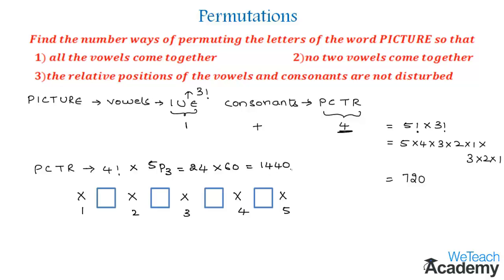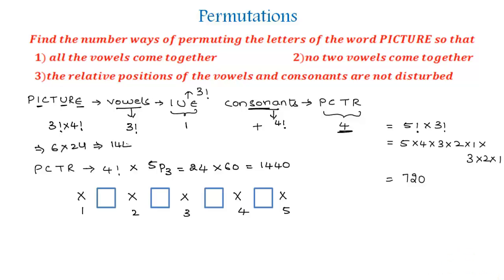For the third condition, the relative positions of the vowels and consonants are not to be disturbed. In PICTURE, the vowels are I, U, and E, and the consonants are P, C, T, and R. The three vowels can be arranged in their relative positions in 3! ways, and the four consonants can be arranged in their relative positions in 4! ways. So the required number of ways is 3! × 4! = 6 × 24 = 144.